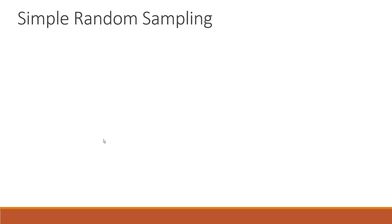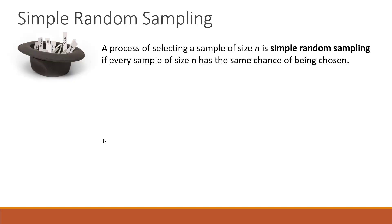Let's start with Simple Random Sampling. Its name really tells us that the process should be simple — and it is. The idea is pretty much similar to putting names in a hat and pulling out a number of names that you need. That's what makes the selection random.